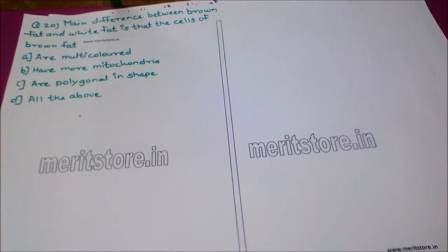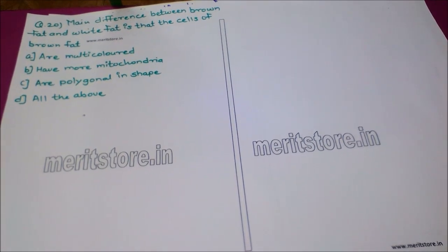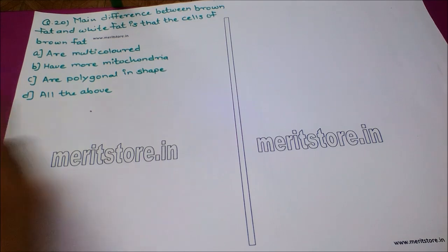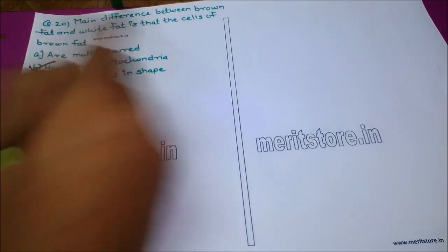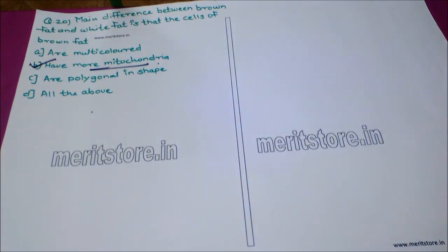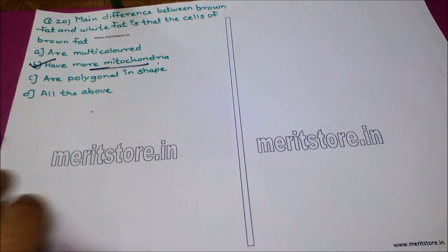The next question: the main difference between brown fat and white fat is that the cells of brown fat — option A: are multicolored, option B: have more mitochondria, option C: have a polygonal shape, option D: all of the above. The correct answer is option B, have more mitochondria, as more energy is required by the brown fat cells.